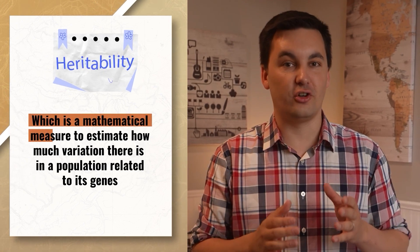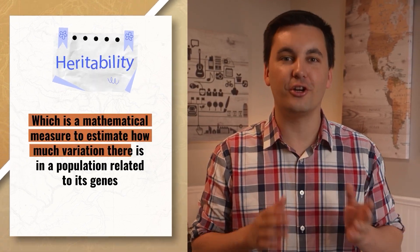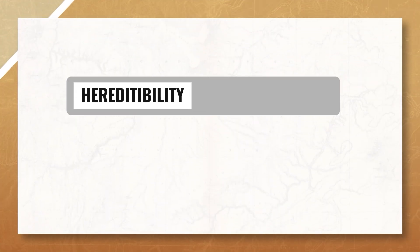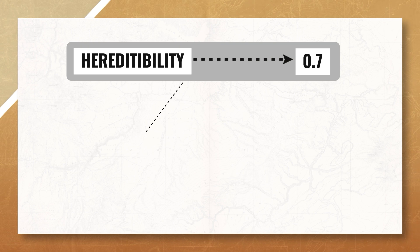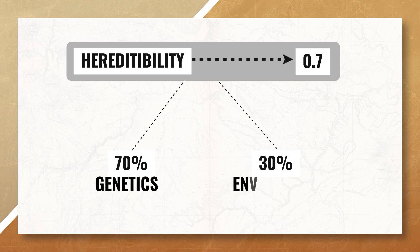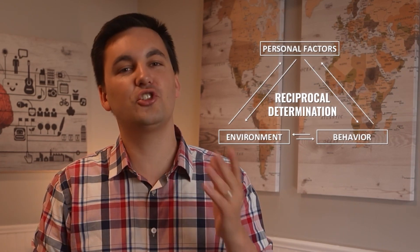One of the ways we could better understand the influence of nature or nurture is by looking at heritability, which is a mathematical measure to estimate how much variation there is in a population related to its genes. Notice I said population — these estimates only apply to populations, not individual people. For instance, if the heritability for a trait is 0.7, that means 70% of the variation of that trait in a population is caused by genetics and 30% is due to the environment. Heritabilities can range anywhere from 0 to 1. Later in this course we will talk about reciprocal determinism, which connects back to this discussion.